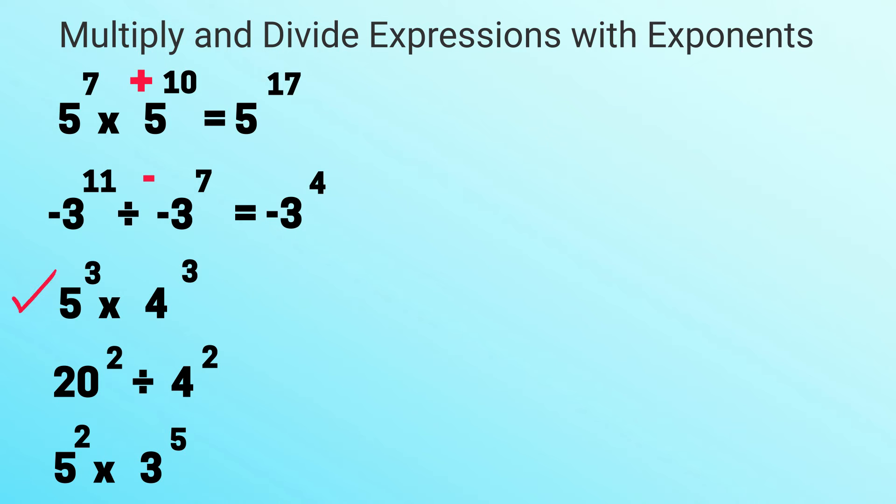Now what do we do if we have different bases but the same exponents? So you will multiply the bases, which is 5 times 4 which is 20, and then you keep the exponent of 3 or cubed.